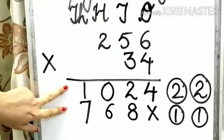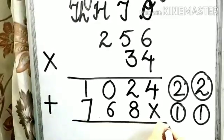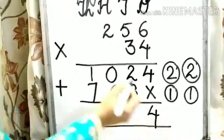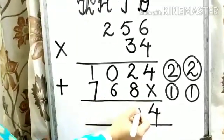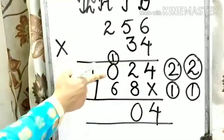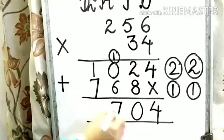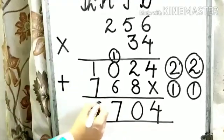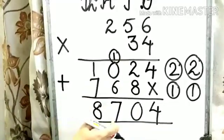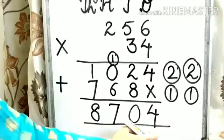Now we need to add these numbers. Put the symbol of addition here. 4, 2 plus 8 is 10, so write 0 here and 1 will become carry. 1 plus 0 is 1. 1 plus 6 is 7. 1 plus 7 is 8. So the product is 8,704. I hope it is clear to all of you now. Thank you, students.